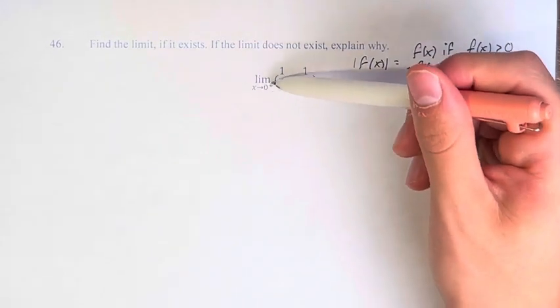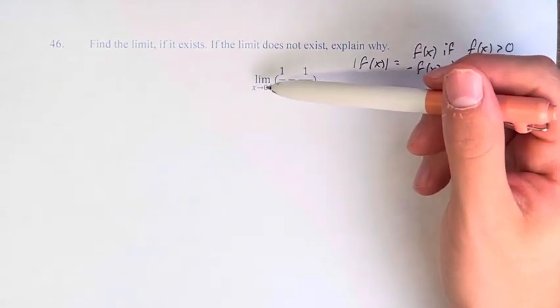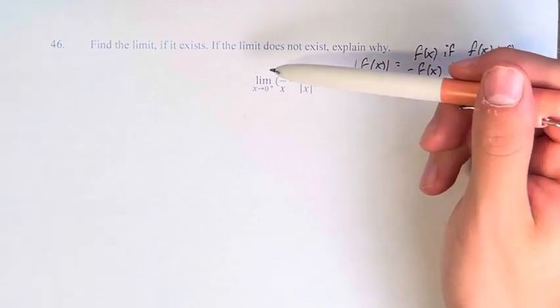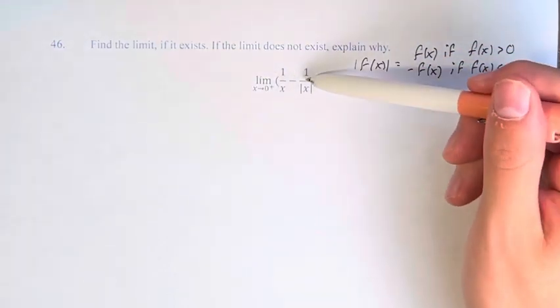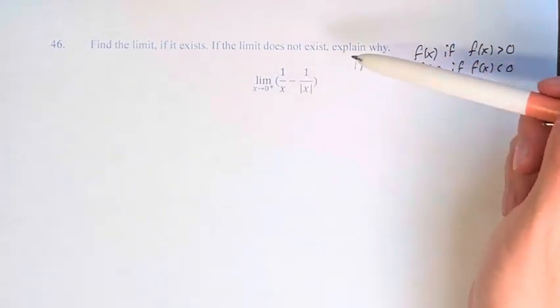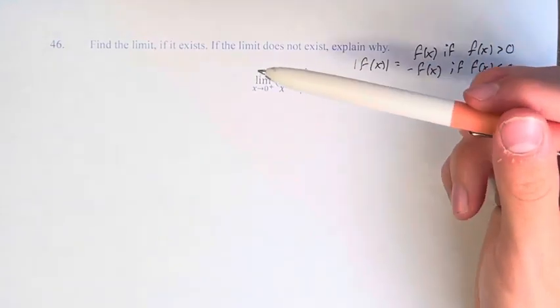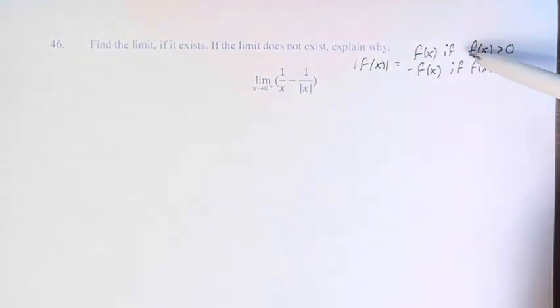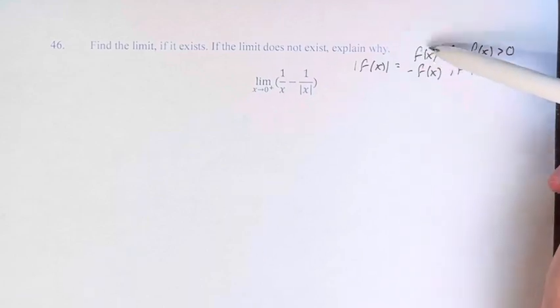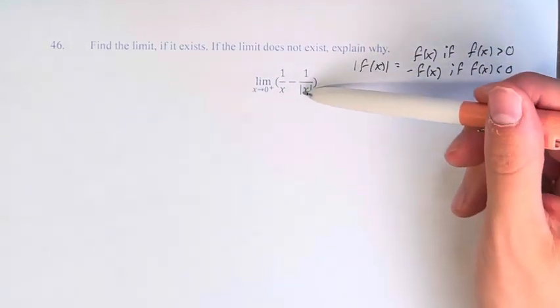Here we're approaching 0 from the right. That means that we're getting values that are slightly greater than 0, and we're plugging them in to this function. You can think about it that way. Therefore, these are values that are greater than 0. Therefore, it's just equal to the thing itself. It's just equal to x.